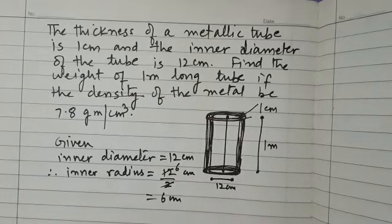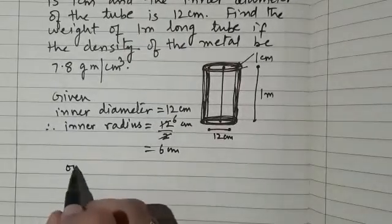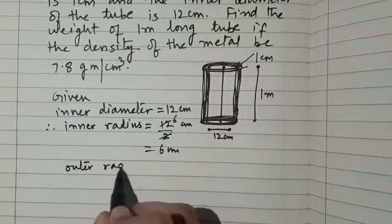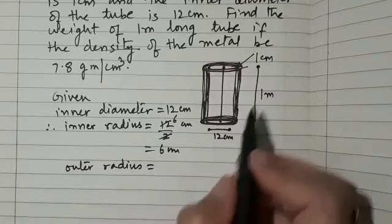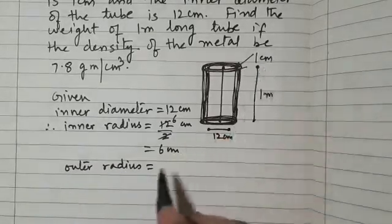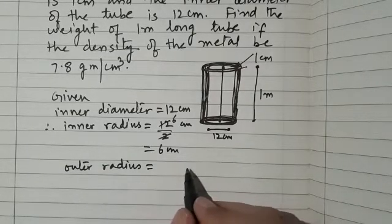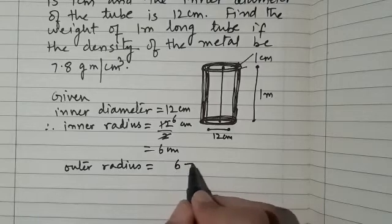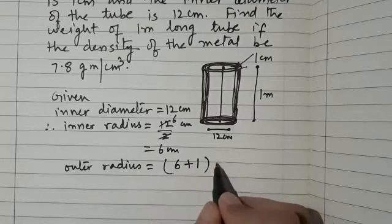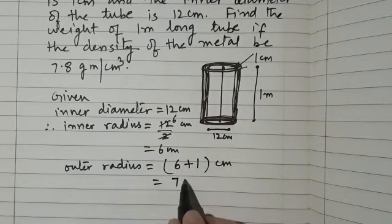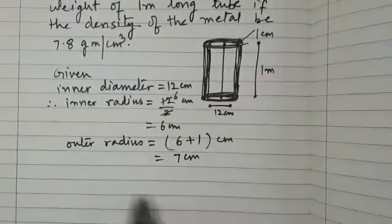So what will be the outer radius? It is given that thickness is 1 centimeter. So the outer radius will be inner radius plus the thickness. That means 6 plus 1, that is 7 centimeters.